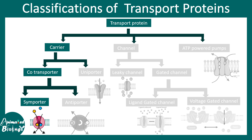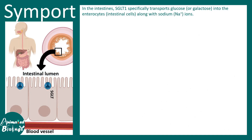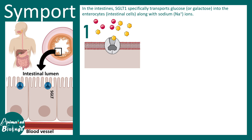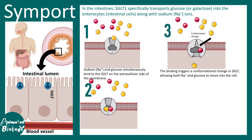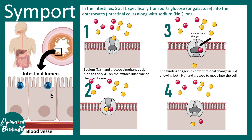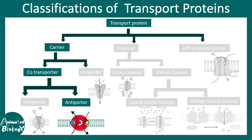Now let's talk about simporters, which fall under the category of co-transport proteins. Simporters can be found in many places, one example being the intestinal lumen. Here, the transport of glucose is coupled with the transport of sodium ions in intestinal cells. On the extracellular side, both glucose and sodium bind to the carrier protein. This binding triggers a conformational change that allows sodium and glucose to both be released inside the cell. Since both are transported in the same direction, this is known as simport.